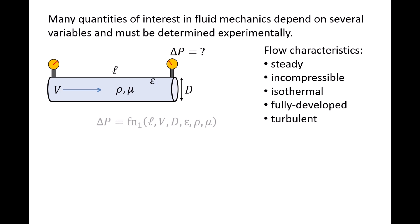We can write this relationship as delta p equals some unknown function of independent variables l, v, d, epsilon, rho, and mu, and we'll call this function fn1.